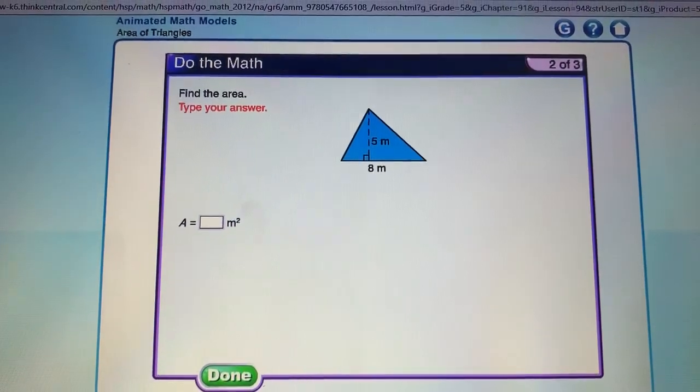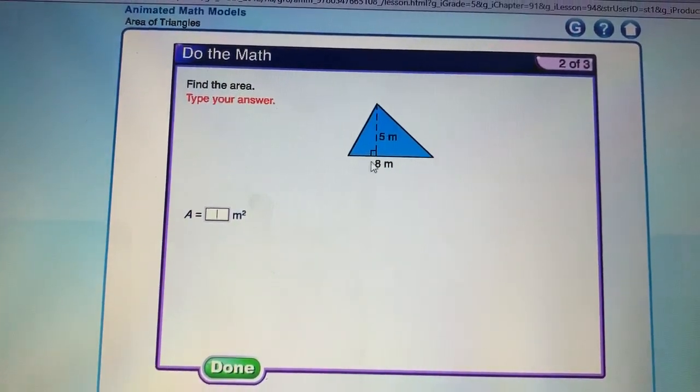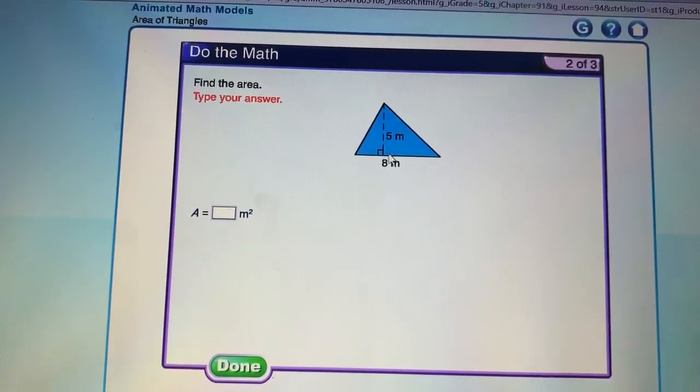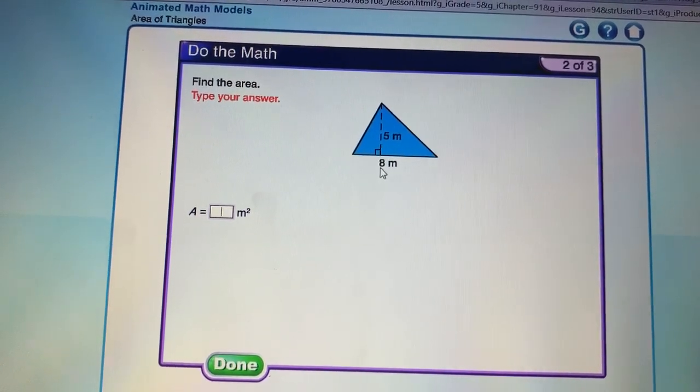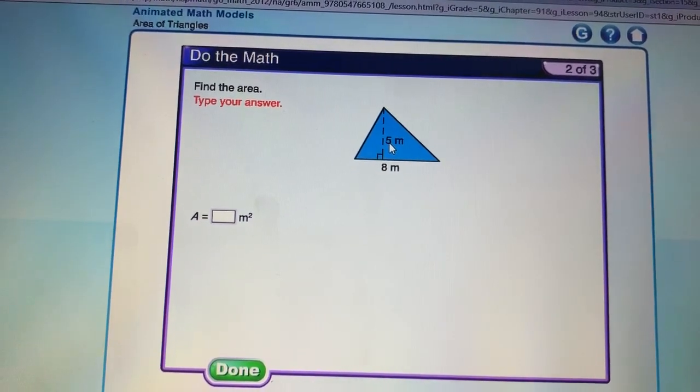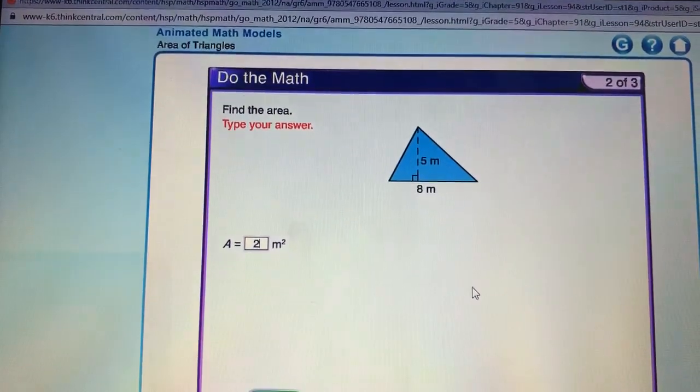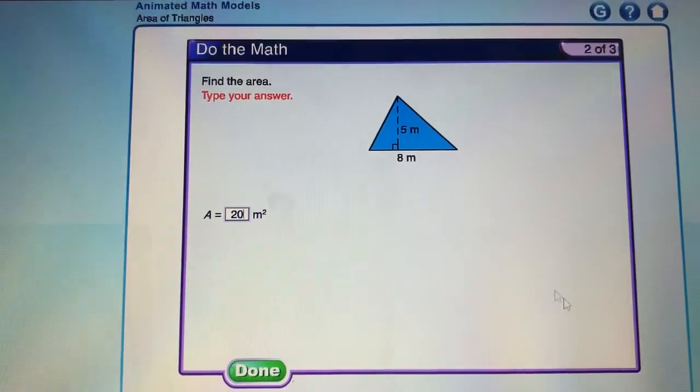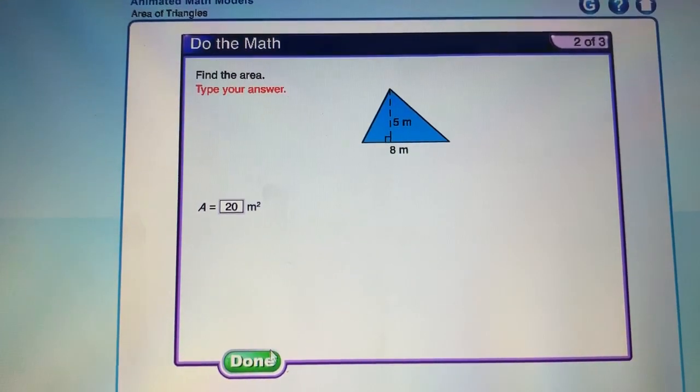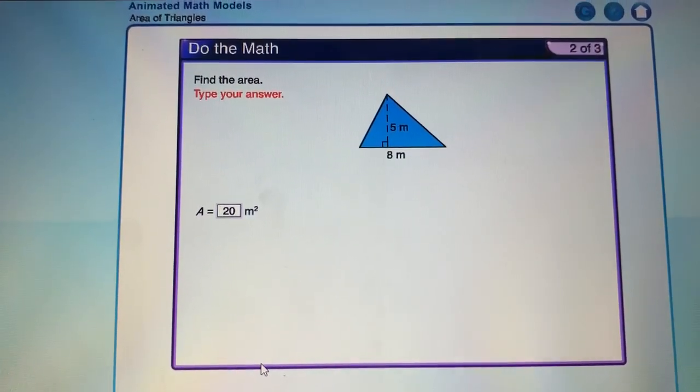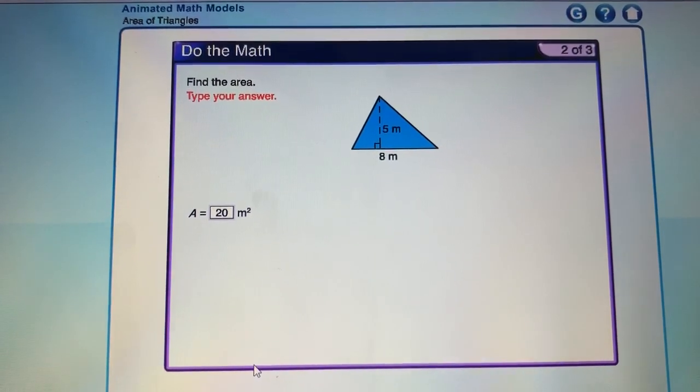Okay, here comes the next one. Find the area of this triangle. It's going to be 8 for the base, 5 for the height. 8 times 5 is 40. And then divided by 2, 20. Okay? And we put 20 there, and that should be it. Okay?